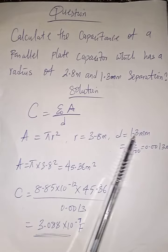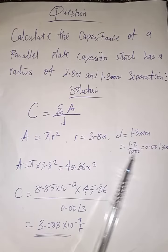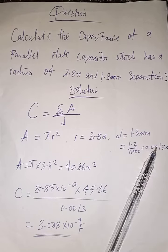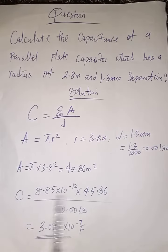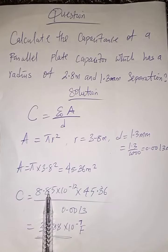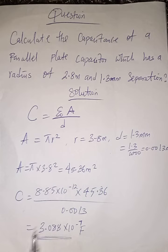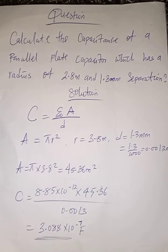The 1.3 millimeters needs to be converted to meters by dividing by 1000. Substituting these values into the formula, with permittivity of free space 8.85×10⁻¹², this is the area, and this is the separation. If you solve this in your calculator, you're going to have 3.038×10⁻⁷ as your answer.